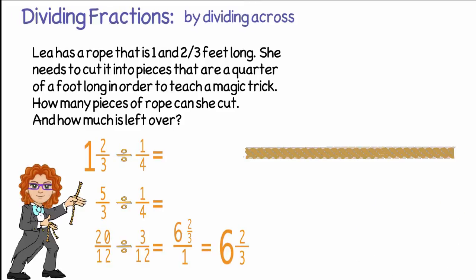Let's check the problem by drawing out the situation. Before we start, let's mark the rope into inches. One and two third feet would be the same as twenty inches. Since one quarter of a foot is three inches, Li needs three inch pieces.